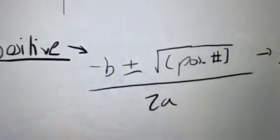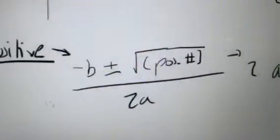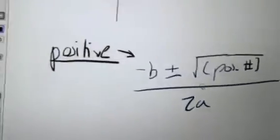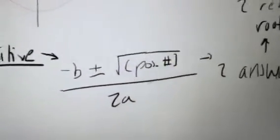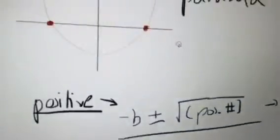Say it's positive, you have a plus or minus sign. So you'll be adding this number and then in another place one time, you will be subtracting this number. So you'll end up with two answers.